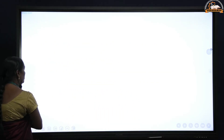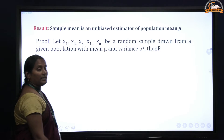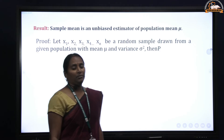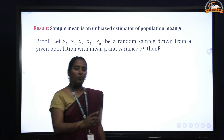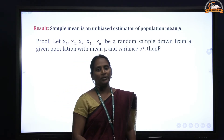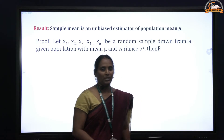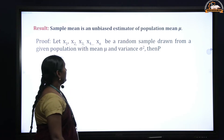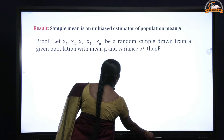Before solving problems on estimation, let us look at a result: the sample mean is an unbiased estimator of the population mean mu. The population size is denoted by capital N, sample size by small n, population mean by mu, and sample mean by x bar.